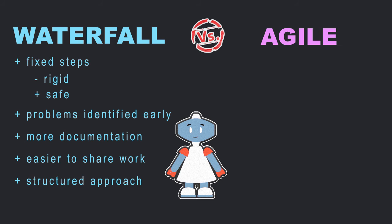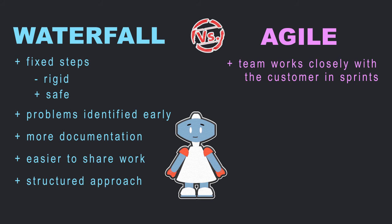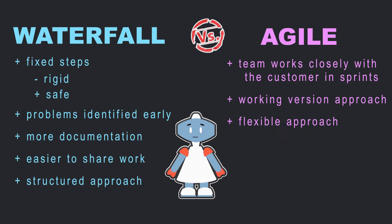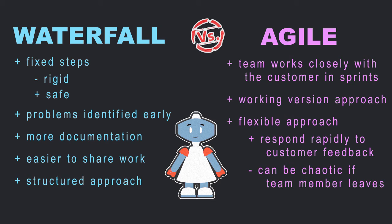In agile, the team works closely with the customer throughout the sprints by using a working version approach. While this flexible approach allows the team to respond rapidly to customer feedback, it can be chaotic if a team member leaves before the project is finished.